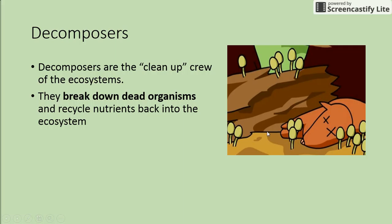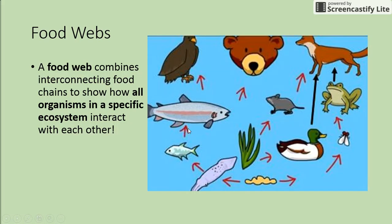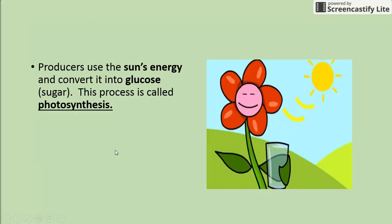We also have decomposers, the cleanup crew of the ecosystem. They break down dead organisms and recycle nutrients back into the ecosystem — like mushrooms breaking down a dead fox. The way we organize ecosystems to show how things are related is through a food web, which combines interconnecting food chains to show how all organisms in an ecosystem interact with each other.